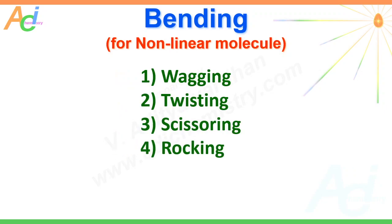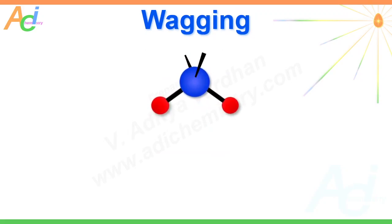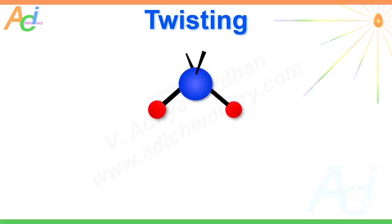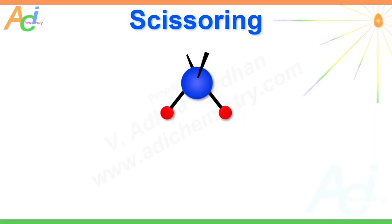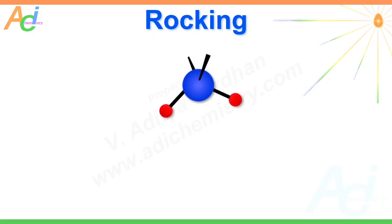For other non-linear and more complex molecules, the bending vibrations are more interesting and can be subdivided into wagging, twisting, scissoring, and rocking. In wagging, both bonds bend to the same side of a plane at the same time. In twisting, only one bond undergoes bending at one time. Then there is scissoring, and finally the rocking mode.